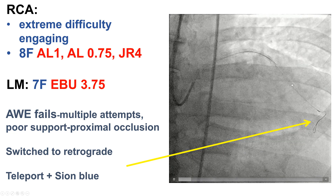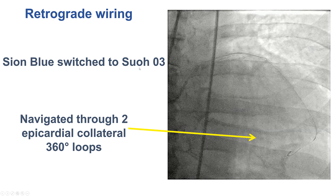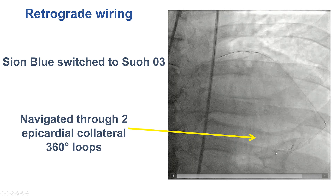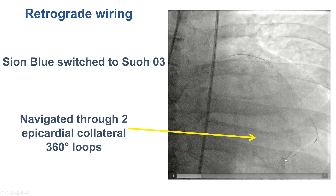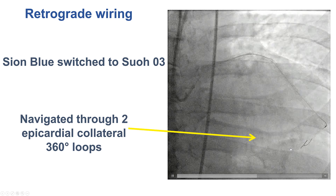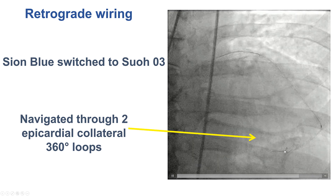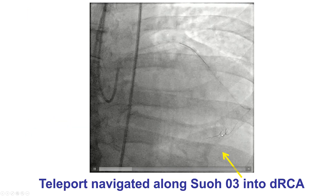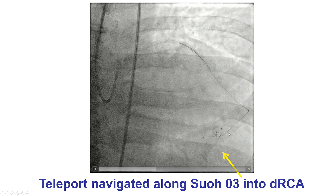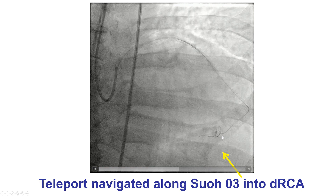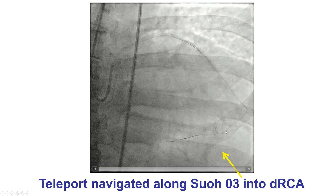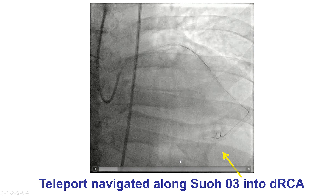We used a Teleport microcatheter and a Sion Blue wire to get to the collateral. We then used the SUO-03, which is the standard wire for epicardial and increasingly for septal collaterals, to cross through this highly tortuous epicardial collateral. There were two 360-degree loops that were successfully crossed using the SUO-03 guidewire, and those loops were successfully tracked using the Teleport microcatheter. After navigating the second loop with a slow push, there was straightening of the collateral and advancement of the wire and Teleport microcatheter.